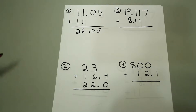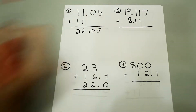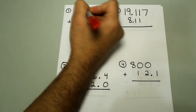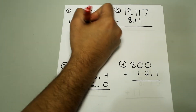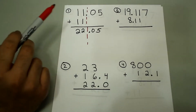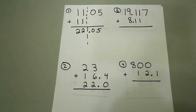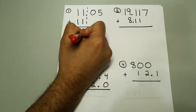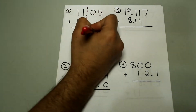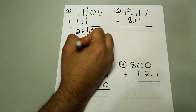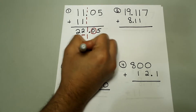The final answer will have the least number of decimal places. Looking at the two numbers we added: 11.05 has two decimal places, but 11 doesn't have any decimal places. So the final answer shouldn't have any decimal places. I draw a dashed line through the entire problem right after the last digit of the number with the least number of decimal places — right after the 1 in 11. We should round to the nearest whole number. Since 0 is less than 5, we round down, so the final answer will be 22.